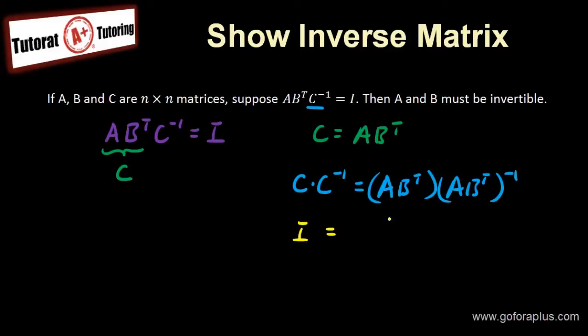So how do we do that? So this must be equal to I. Let's look at that on the side. (AB^T)^(-1). I can apply the inverse into the brackets, and then it will be (B^T)^(-1) and A^(-1).